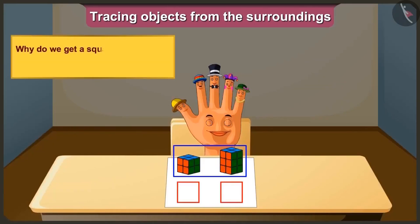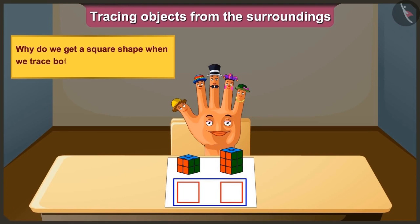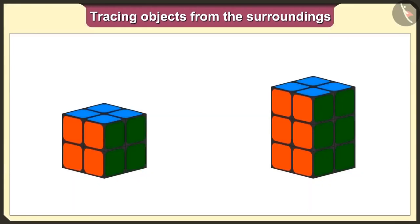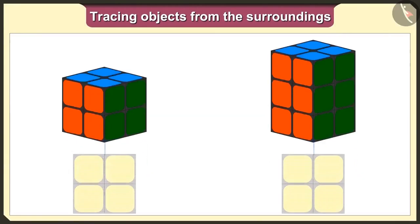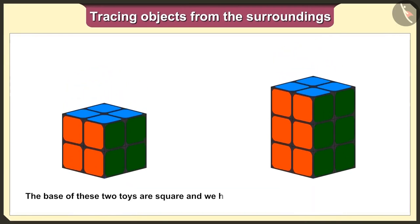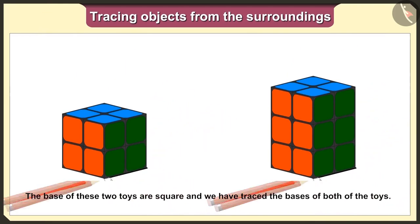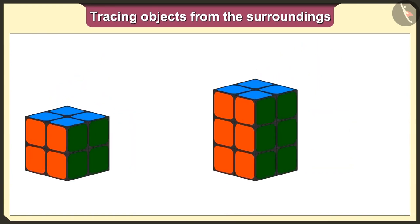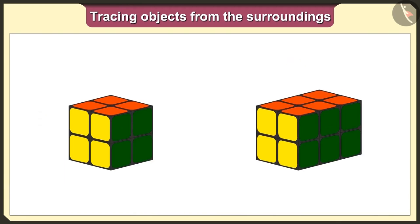But why do we get the square shape when we trace both these toys? Because the base of these two toys are square, and we have traced both the toys with their base. Let's now change their base and keep both the toys like this.